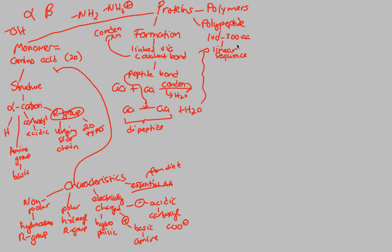So polypeptide is 100 to 300 amino acids. These are all linked together via peptide bonds. Those peptide bonds formed from condensation reactions. Those condensation reactions involved amino acids.